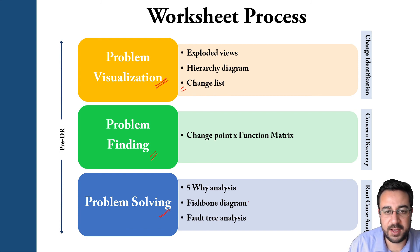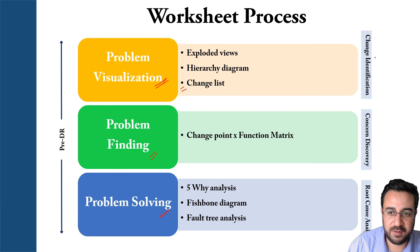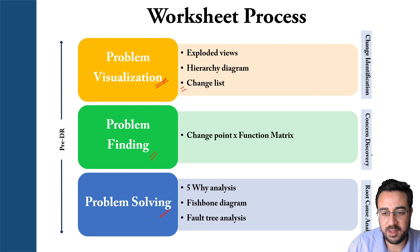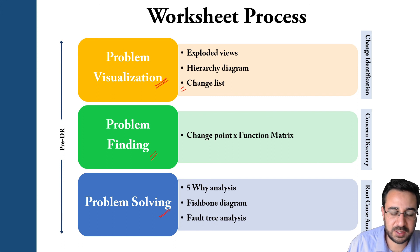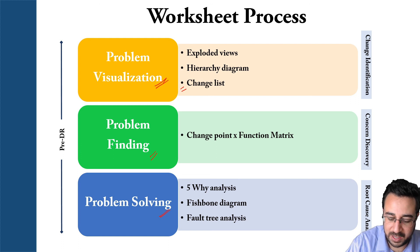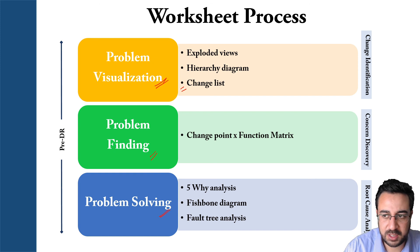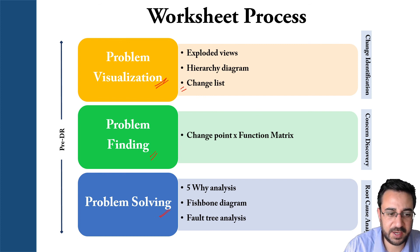Basically, the DRBFM process involves three stages: change identification — you capture the change visually and in writing; concern discovery — thinking outside the box about what could go wrong based on what you have in front of you; and root cause analysis — understanding why that problem is happening or will happen in the future. This way your sheet will be ready to give you an output in terms of recommendations, design approval changes, and so on.